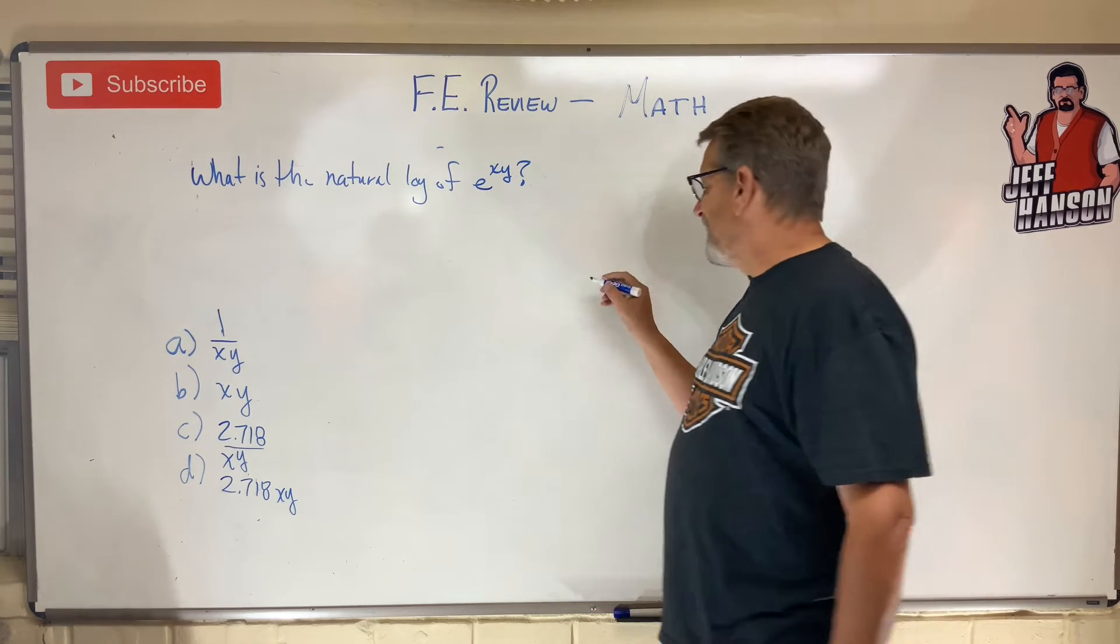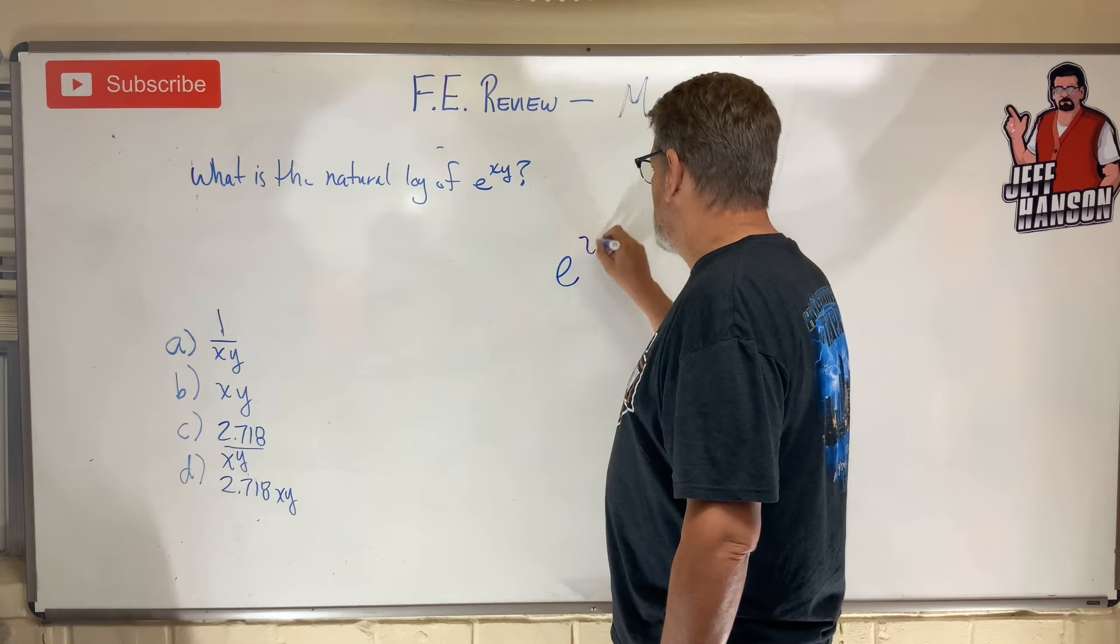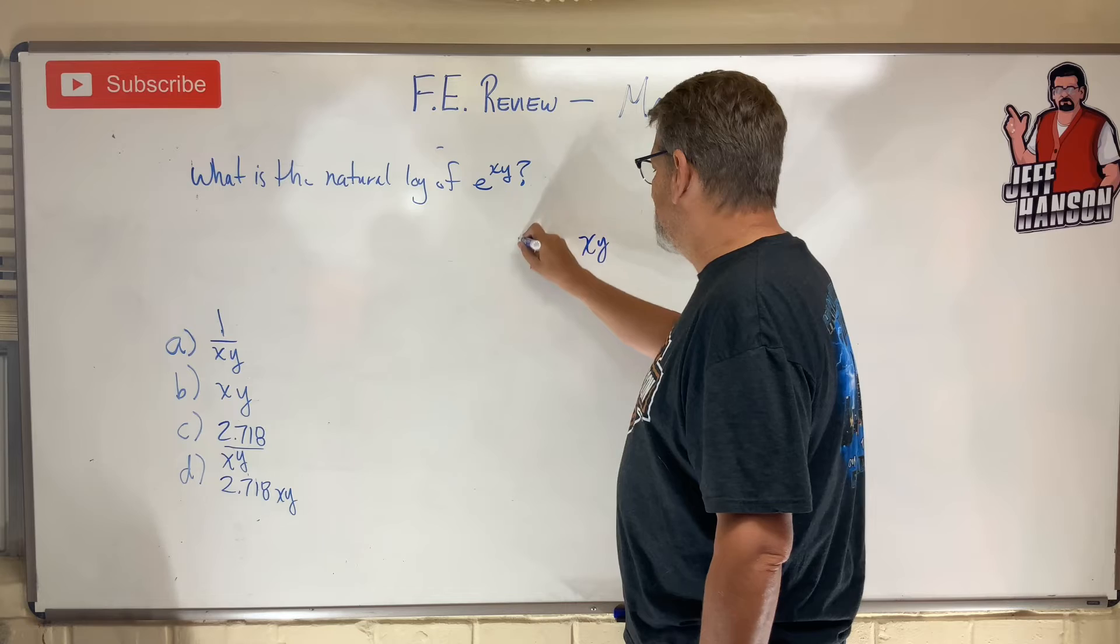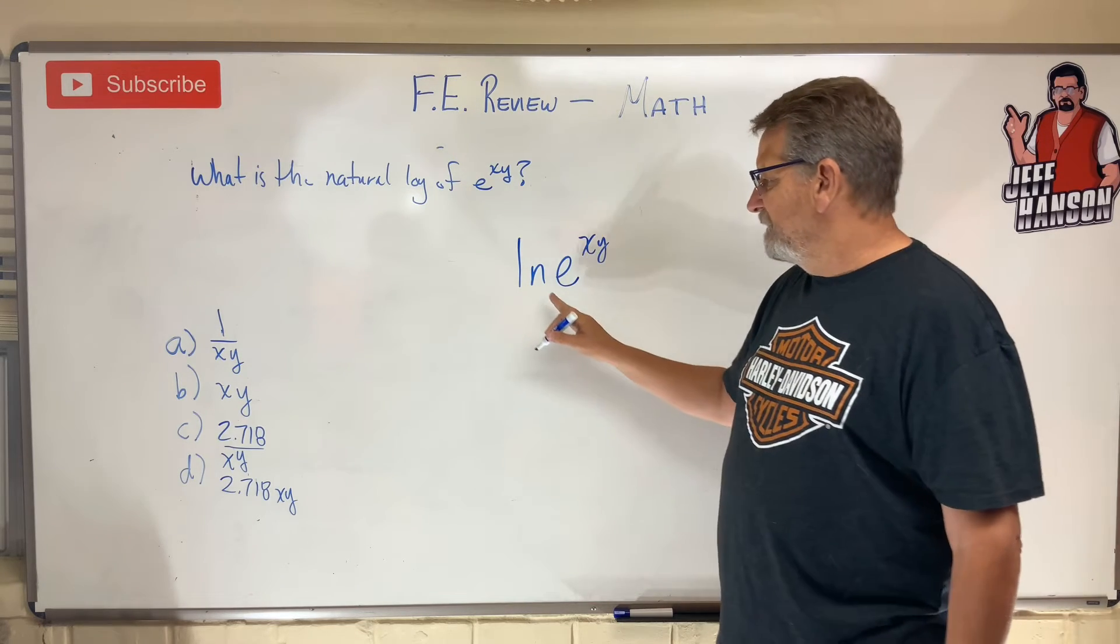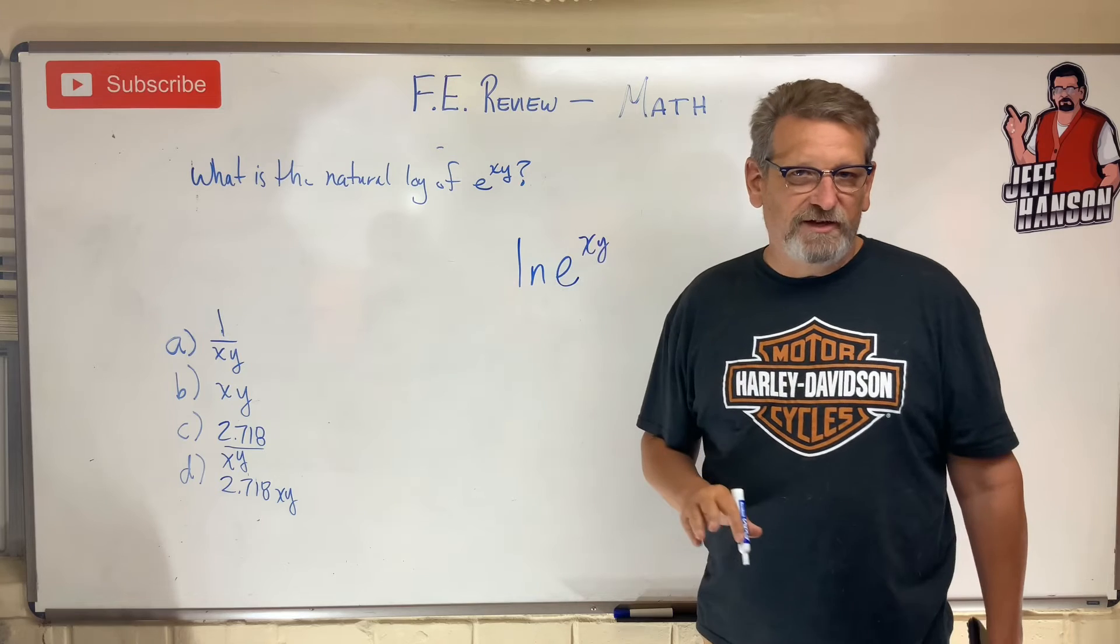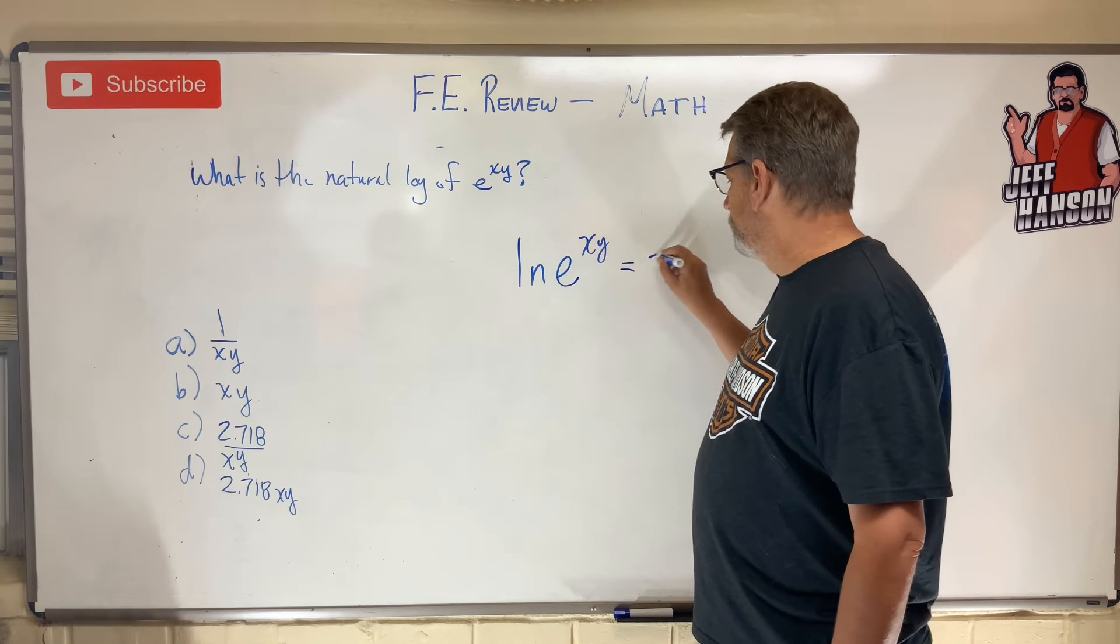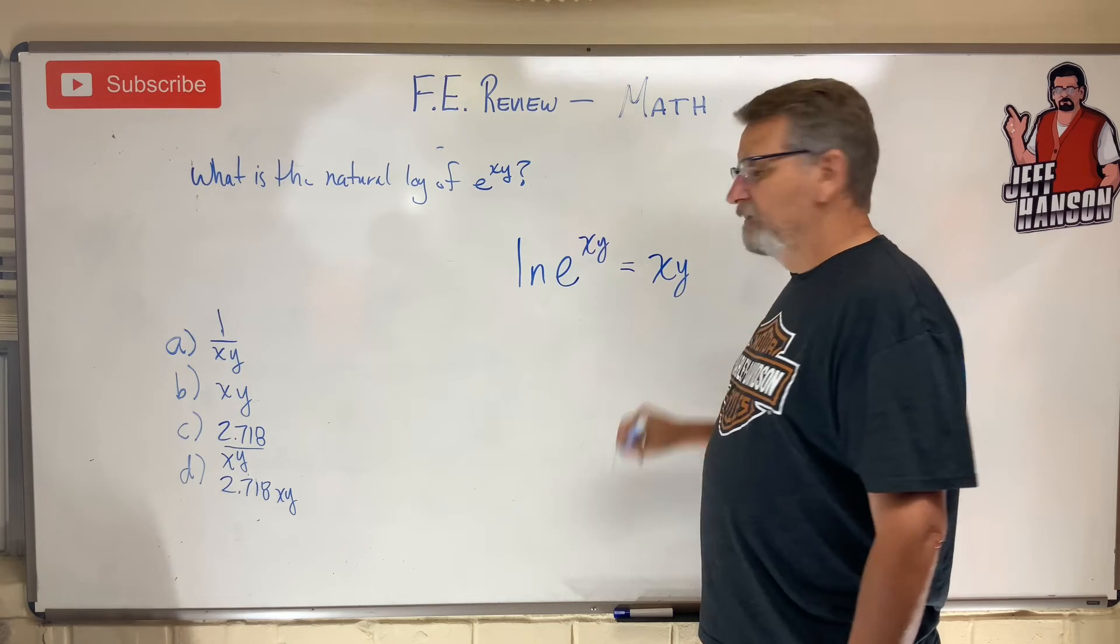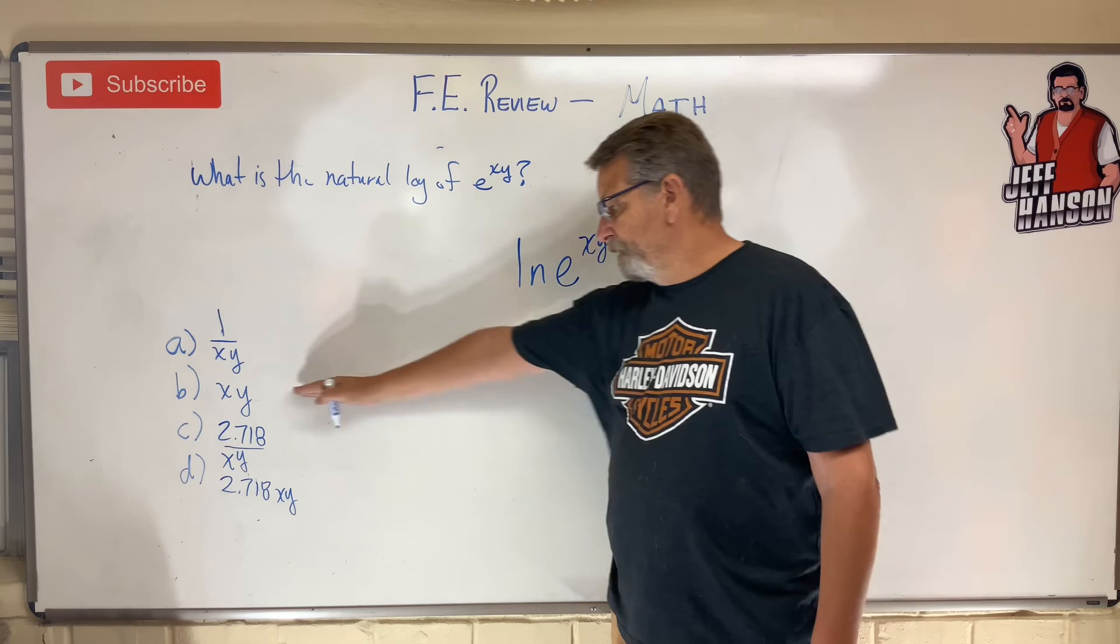Remember when you have e to the anything, to the xy, if I take ln, if I take the natural log of e, natural log just undoes e. And so that is going to be equal to xy by definition. So the answer is b.